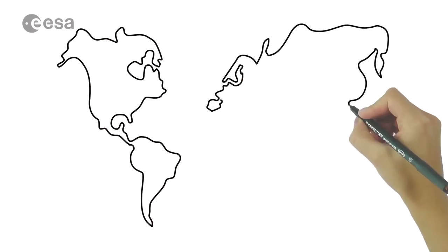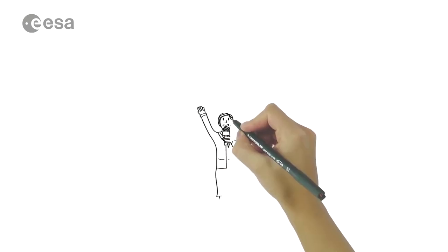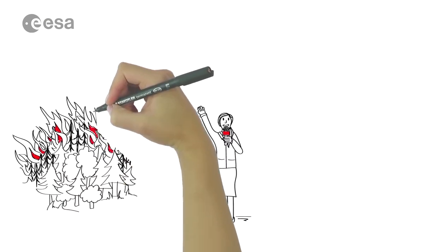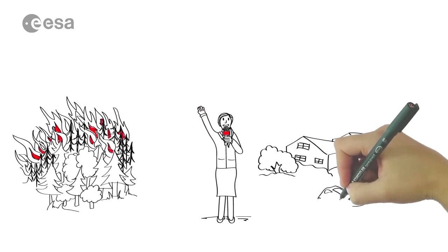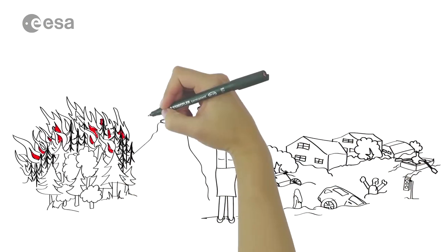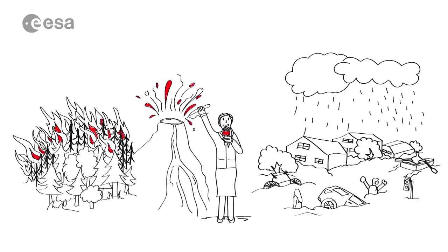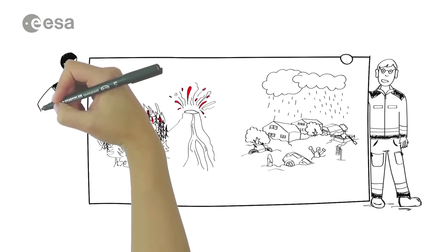Almost every week a natural disaster happens somewhere around the world. We often watch them unfold live on the news, when forests go up in flames, when settlements collapse after an earthquake and roads and bridges are torn away by landslides, when volcanoes erupt or severe floods wash away our communities under torrents of water. When major disasters threaten, the lives of thousands can be put at risk.